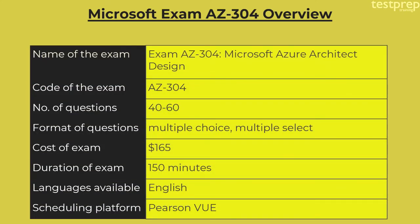The name of the exam is AZ-304, Microsoft Azure Architect Design. The code is AZ-304. There are 40 to 60 questions. The format is multiple choice or multiple select. It costs around $165. Duration is 150 minutes. The language available is English. The scheduling platform is Pearson VUE.